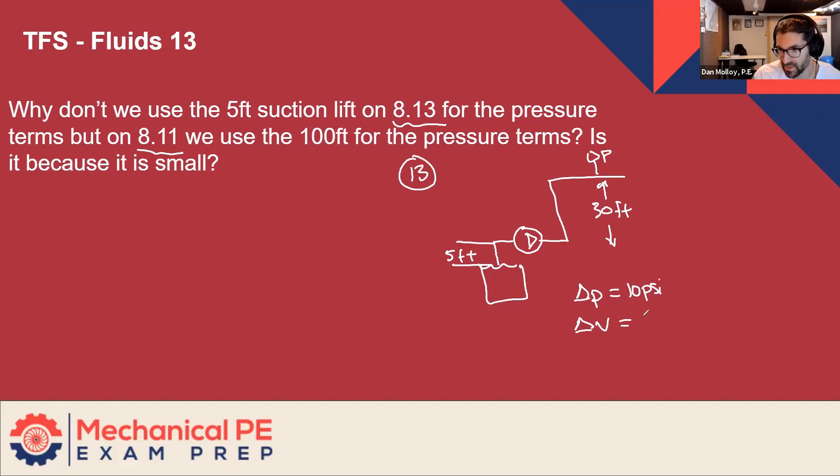We're neglecting velocity in this one, and then the Delta Z is the total difference. So it's the sum of the static suction lift of five feet and the discharge head of 30 feet. So it ends up being 30 plus five, which is 35 feet.